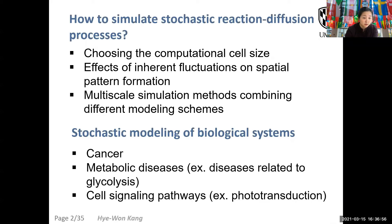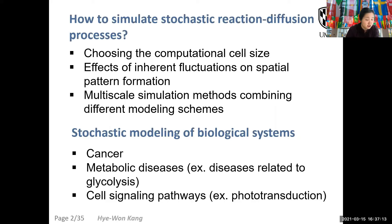Another way to reduce model dimension is to consider an appropriate range of computational cell size, which directly affects the model dimension. For complex reaction-diffusion processes, model simulations can be slow due to the high dimension. In that case, we develop approximate simulation methods to accelerate the simulation of the stochastic model. One way to do that is to perform multi-scale simulation combining different modeling schemes. So I briefly introduced three ways to overcome model complexity due to high dimension.